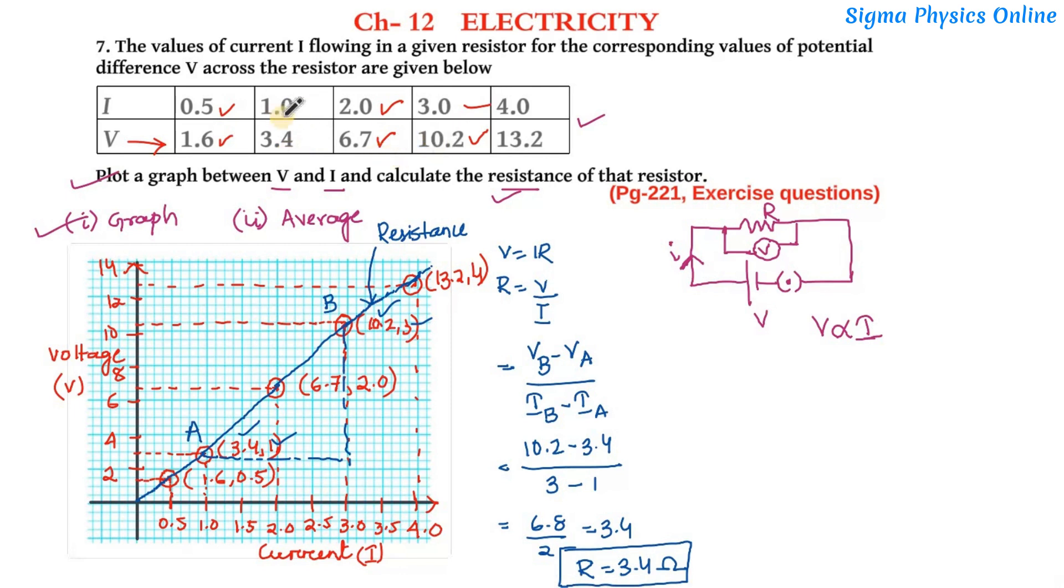So the resistance of this wire is 3.4 ohm. Similarly you can choose any two values of the potential and note down the corresponding current values and you can substitute in this formula to find out the value of resistance. It will come more or less the same.